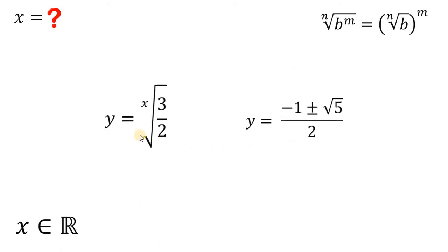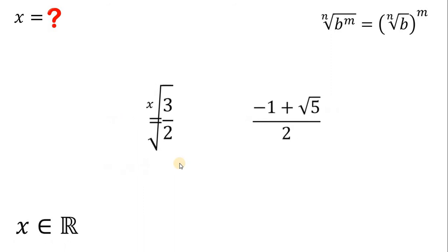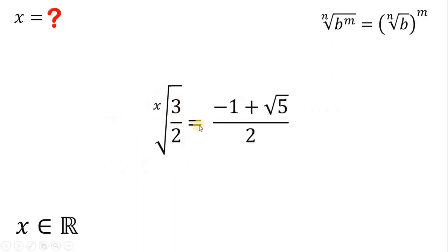Take note that y must also equal x root of 3 over 2. Since x is a real number, the value of y given this equivalent x root of 3 over 2 must be strictly greater than 0. Therefore, we can exclude the negative value for y. Thus, y must equal negative 1 plus square root of 5, all over 2. Now, we have two expressions for y — let's equate them: x root of 3 over 2 equals negative 1 plus square root of 5, all over 2.